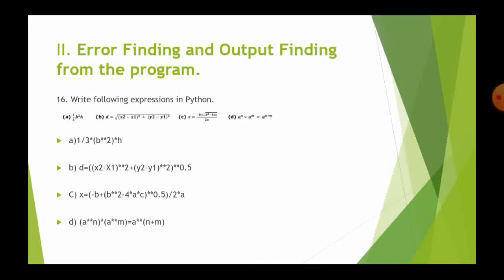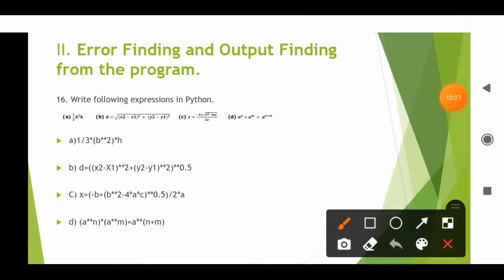Question 6: write the following expressions in Python. First expression: A equals A times (1/3) times B squared times h. In Python: A = int(B**2) * (1/3) * h using the exponentiation operator. Second expression: D equals the square root of (x2 minus x1) squared plus (y2 minus y1) squared. In Python: D = ((x2 - x1)**2 + (y2 - y1)**2)**0.5 because root is the power of 0.5.